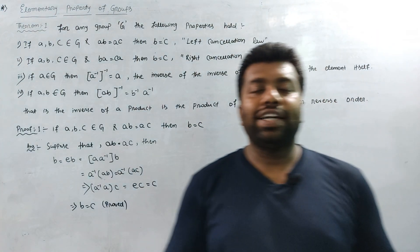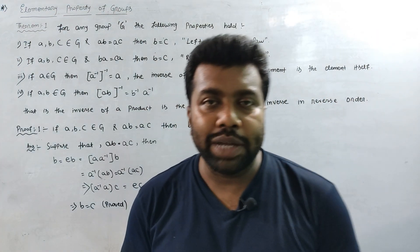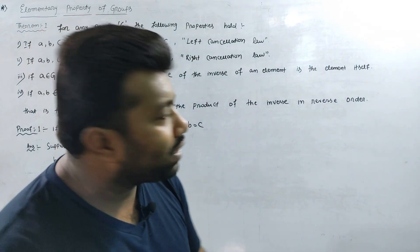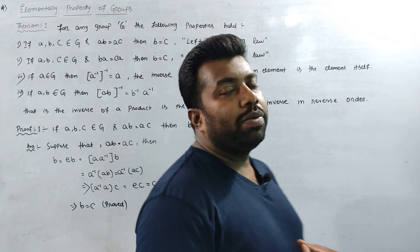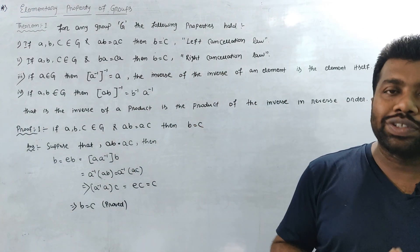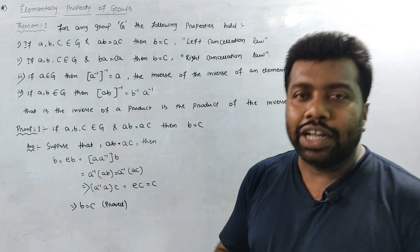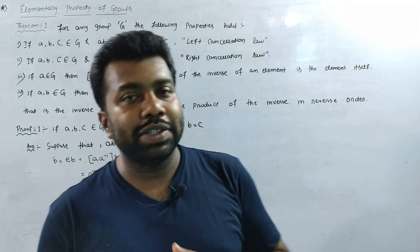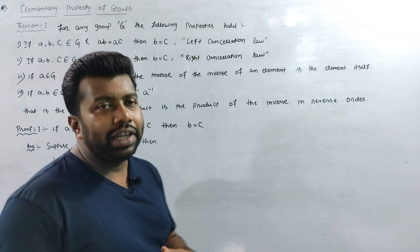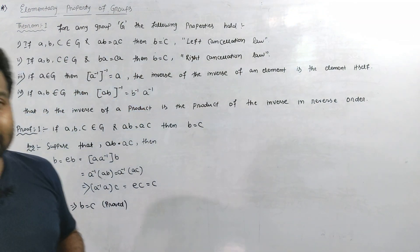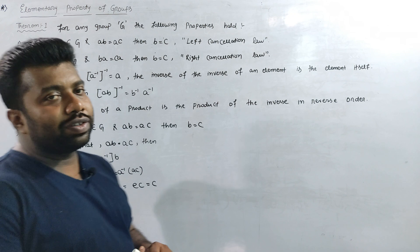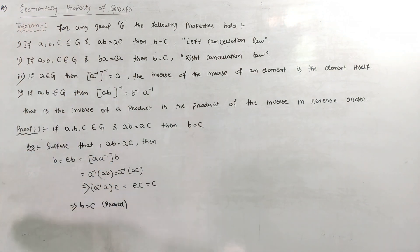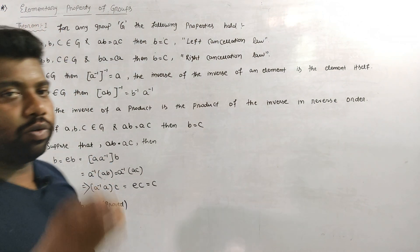Good evening students. I am very proud of you in the third semester. So you have to start your third semester. In this video, it is called Core Paper 6, which is called Elementary Property of Group.